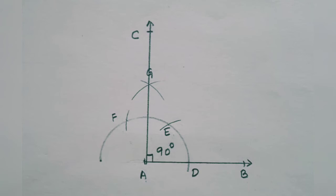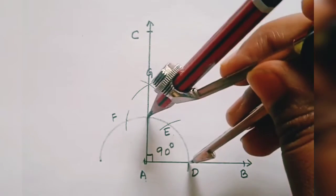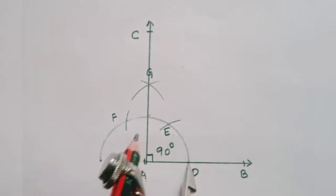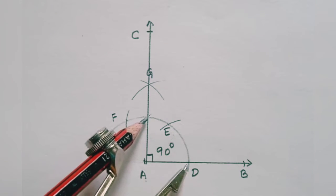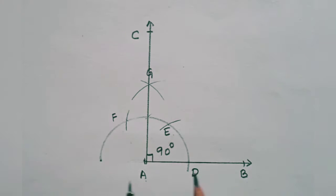So now 90 degree is constructed. After constructing 90 degree, now you take the measure of this arc. So these two you can see here. So the measure of this arc you can take. Don't take the measure of this arc.